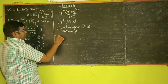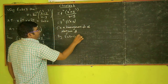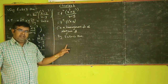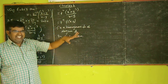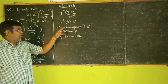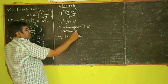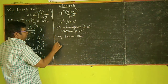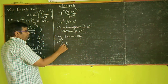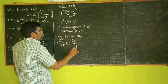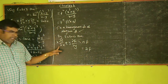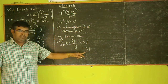Therefore, by Euler's theorem, if f is a homogeneous function of degree n, then x into ∂f/∂x plus y into ∂f/∂y is equal to n into f. Here n is equal to 2. Therefore, since f is a homogeneous function of degree 2, by Euler's theorem: x into ∂f/∂x plus y into ∂f/∂y is equal to 2f.